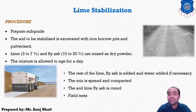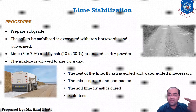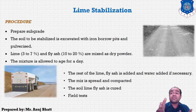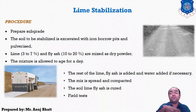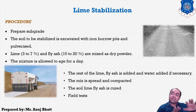The portion of fly ash — 10 to 20 percent — should be mixed as a dry powder with the lime. After excavating the soil mass and taking three to seven percent of lime, we add the fly ash portion. The dry powder mixture is then mixed, and the mixture is allowed to age for one day.